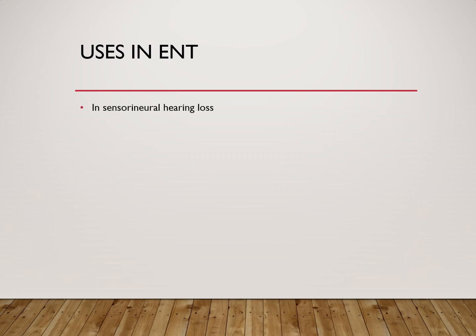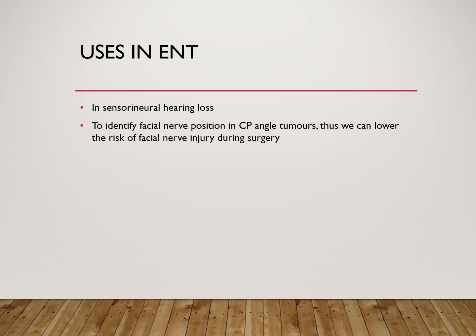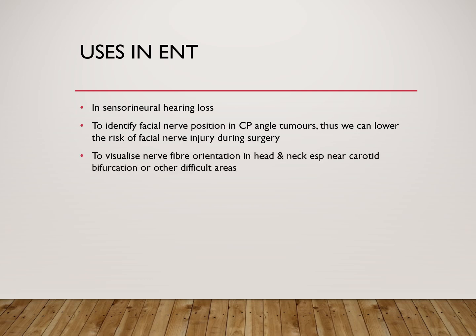Uses in ENT: In sensorineural hearing loss, it helps to assess the condition of the cochlear nerve fibers, detecting minute changes in the cochlear nerve in both prelingual and postlingual deafness. It can identify facial nerve position in cerebellopontine angle tumors, thus lowering the risk of facial nerve injury during surgery. It also helps to visualize nerve fiber orientation in the head and neck, especially near the carotid bifurcation or other difficult areas.